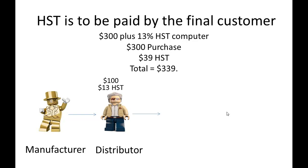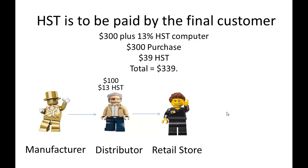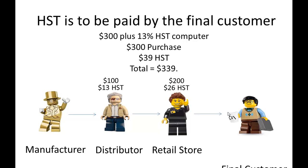The distributor then takes it and sells it to the retail store for $200 plus the HST — 13%, which is $26. The retail store finally sells it to the final customer for $300 plus $39 in HST.